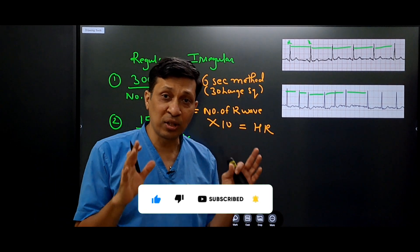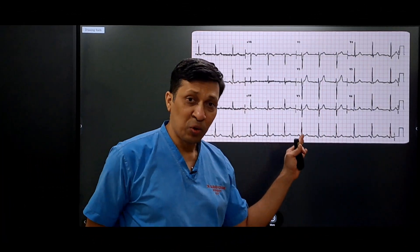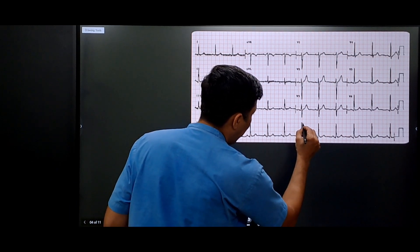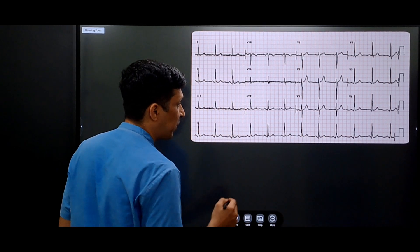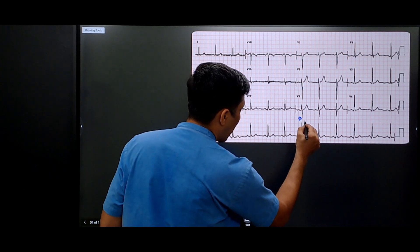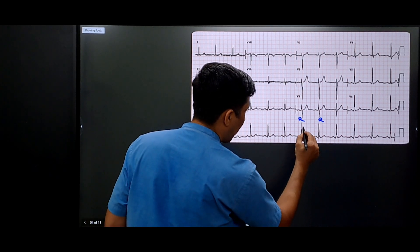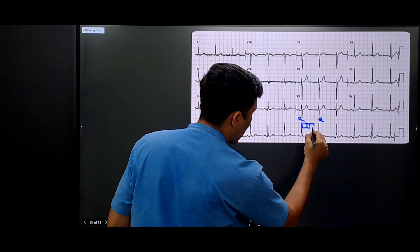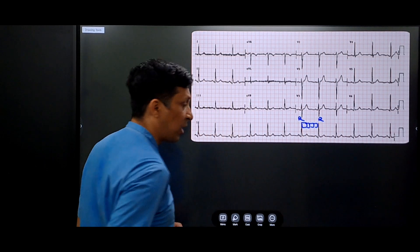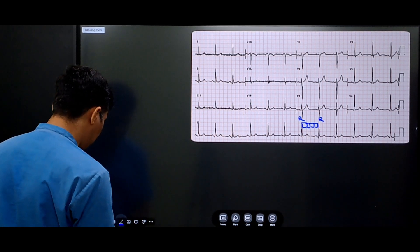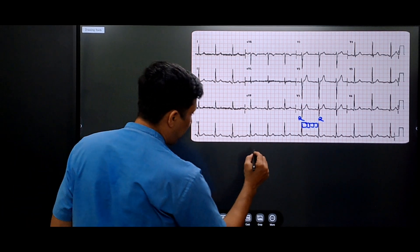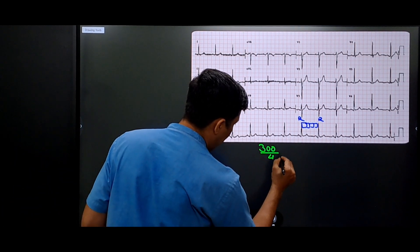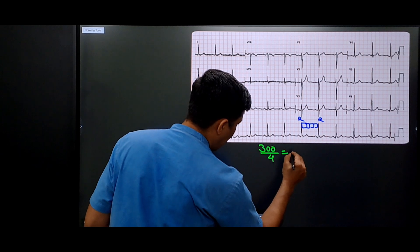Now we will see all these things on an actual ECG. In this lead, we will calculate the number of squares between two R waves. This is one R wave and this is another R wave. The number of large squares is 1, 2, 3, and 4 — so 4 large squares. According to the formula, the heart rate will be 300 divided by 4, which equals 75.